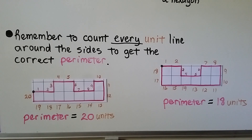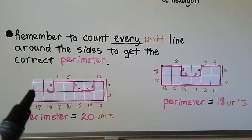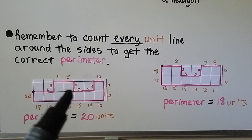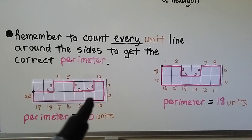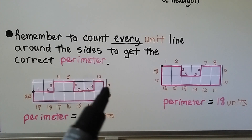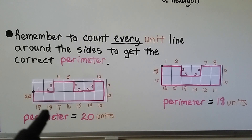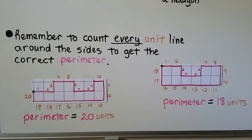Remember to count every unit line around the sides to get the correct perimeter. Starting here, we count: 1, 2, 3, 4, 5, 6, 7, 8, 9, 10, 11, 12, 13, 14, 15, 16, 17, 18, 19, 20. The perimeter is equal to 20 units. We say units because it didn't tell us if it was inches or centimeters or feet.